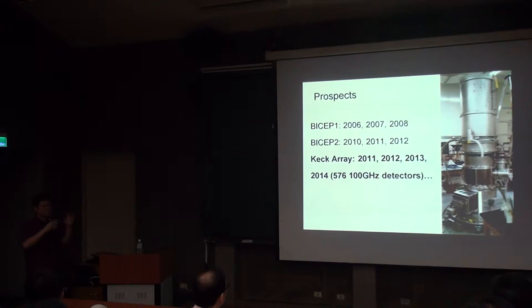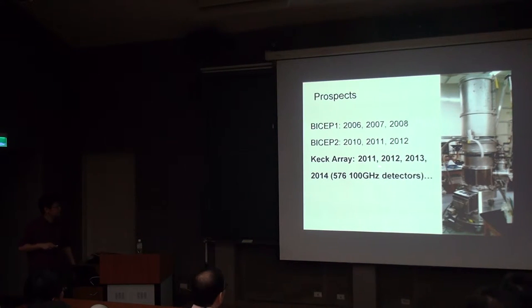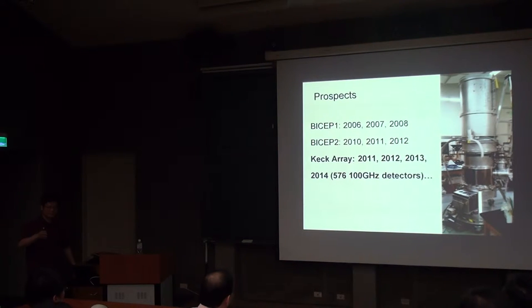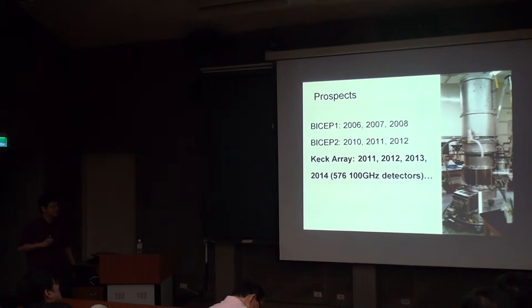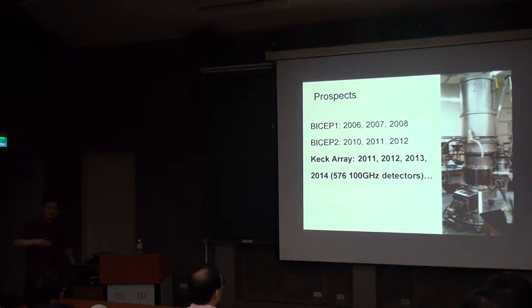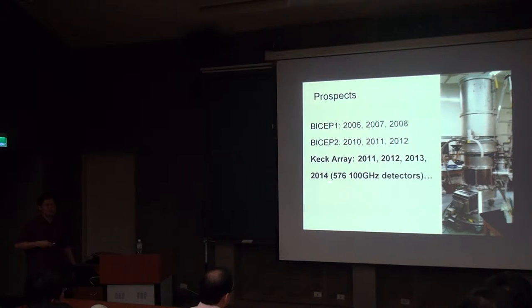Since we'd seen something in the map before we even published, we decided to put two receivers at 95–100 GHz in the Keck Array. Keck Array is a copy of BICEP2 built multiple times — we pulled out two 150 GHz receivers and put in two 95 GHz receivers to have some weight at low frequency. That's the evolution we saw earlier, and we've had that data for a year now.